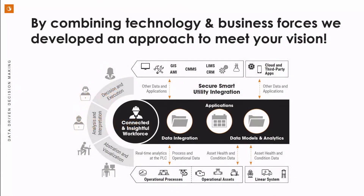What are the components of a smart utility or utility of the future? Most utilities have different types of siloed systems — GIS, information from the laboratory, customer information systems, and various cloud and third-party applications. From a smart utility standpoint, you want to take all the data from those individual systems and put it together so you can run different types of models and make sense of it. That in turn influences how you run your operational processes and different assets. The whole idea is to have a connected, insightful workforce that can visualize and analyze data, make decisions, and execute off of what they learn.